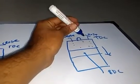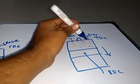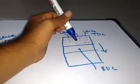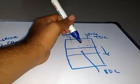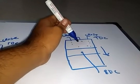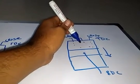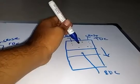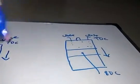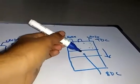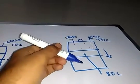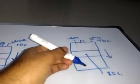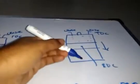In this power stroke the piston moves from the top dead center to the bottom dead center. We call this the power stroke because only in this process do we get the power to reciprocate the piston. After the end of this power stroke, the piston will be at the BDC — that is the bottom dead center at this point.